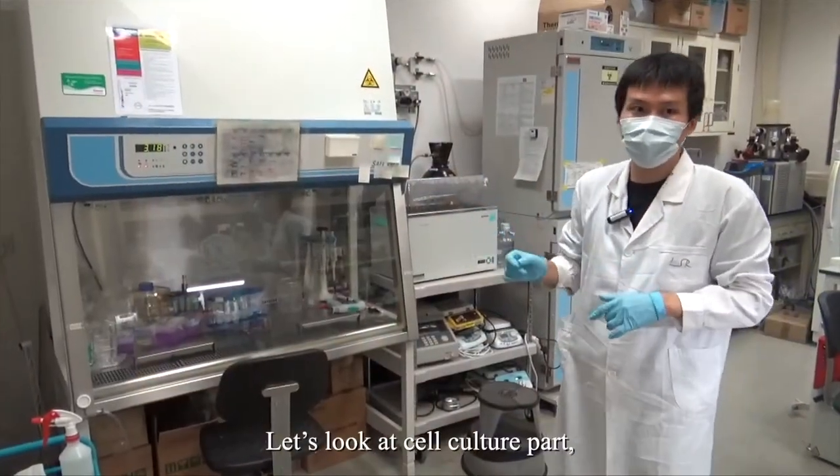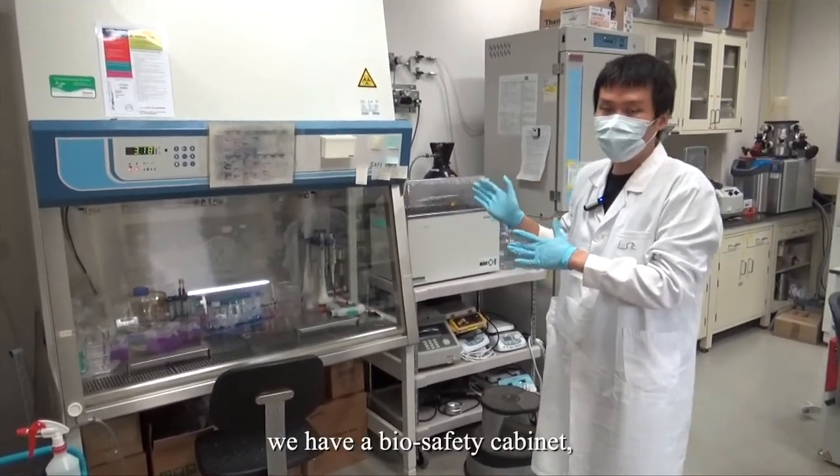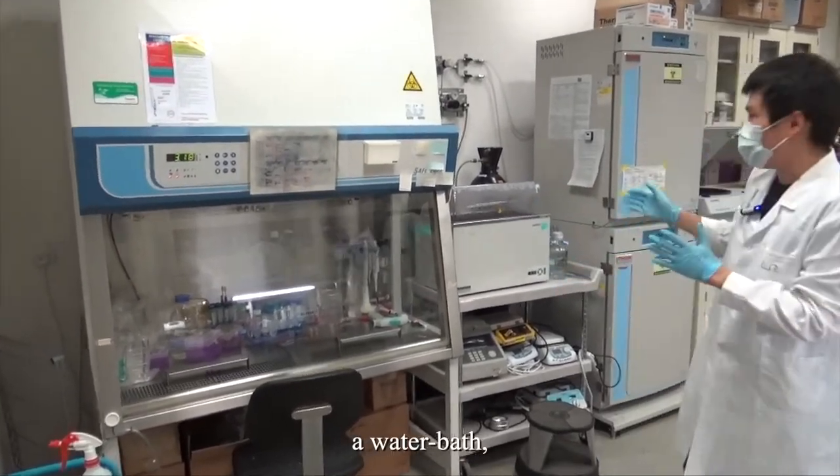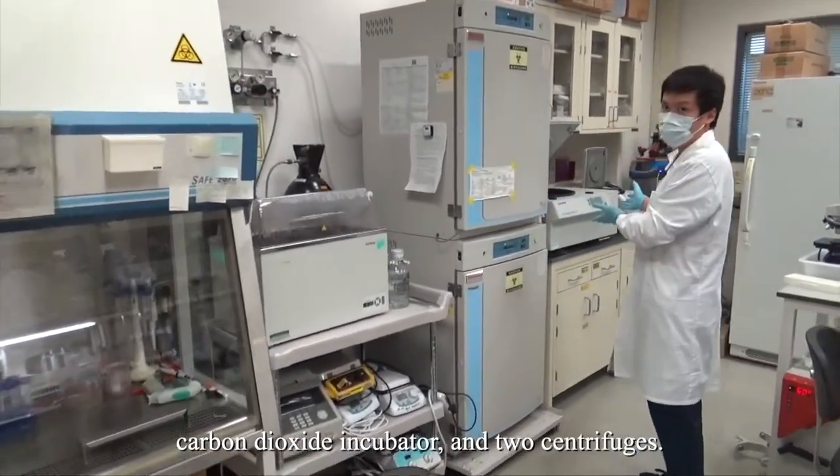Now, let's look at the cell culture part. As you can see, we have a cell culture safety cabinet, a water bath, a carbon dioxide incubator, and two centrifuges.